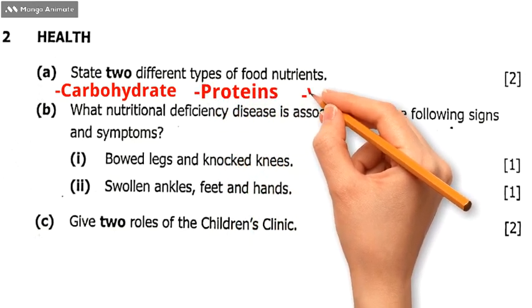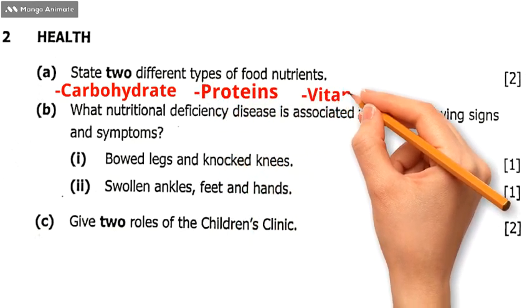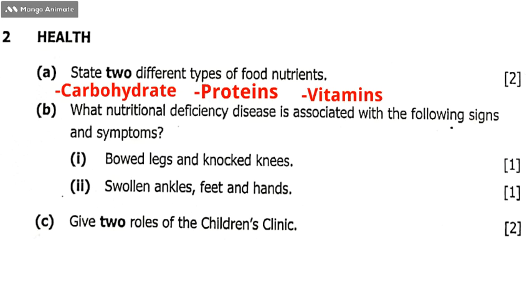So I've got: one, carbohydrates; two, proteins; three, vitamins. They just want two, so you can pick any two of those three to write down.